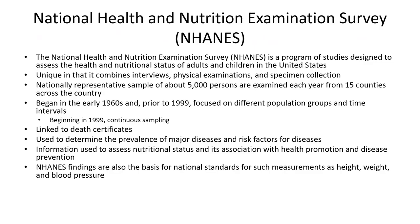Next, we will discuss the National Health and Nutrition Examination Survey, or NHANES. NHANES is a program of studies designed to assess the health and nutritional status of adults and children in the United States. It is unique in that it combines interviews, physical examinations, and specimen collection. It consists of a nationally representative sample of about 5,000 people who are examined each year from 15 counties across the country. NHANES began in the early 1960s, and prior to 1999 focused on different population groups and time intervals. Beginning in 1999, the survey has had continuous sampling.